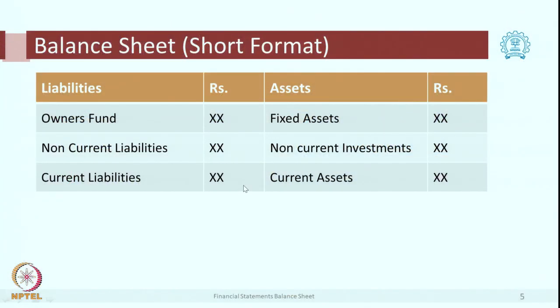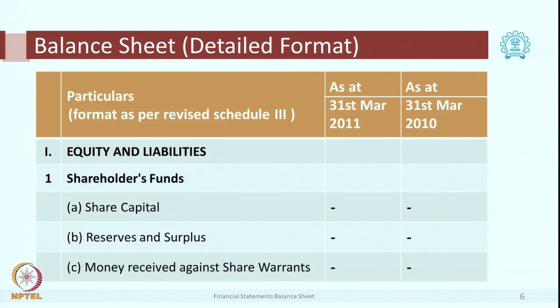You already know the short form format of balance sheet — there are 6 items, and we are going to discuss each of them in detail. We had also seen a detailed format of balance sheet under Schedule 3 of Companies Act. So we have equities and liabilities, then shareholders' funds, share capital, reserves and surplus. If you do not know their meanings, please ask on the discussion forum.